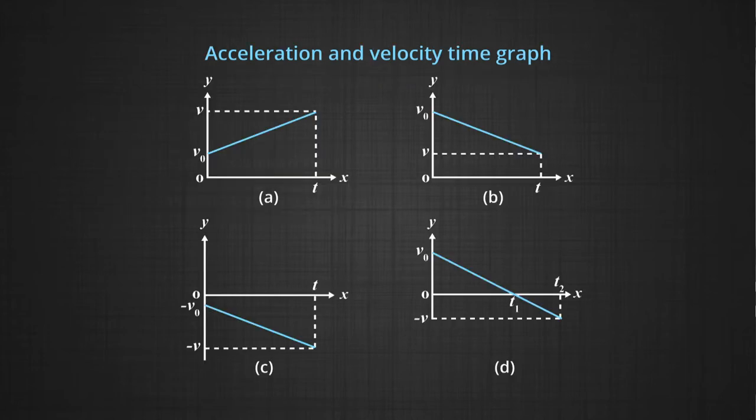Let us consider velocity time graph and see if we can make sense of it to predict acceleration. In graph A, you can see velocity on the y-axis and time on the x-axis. V0 indicates the initial velocity. In the first graph, as you see, the straight line shows that the velocity at the end of time T is a value V. This means that the object must have accelerated from V0 velocity to V in a time interval of 0 to T.